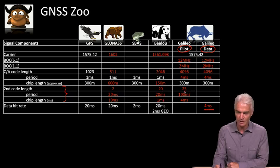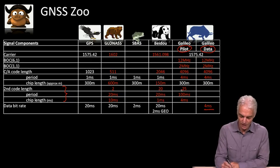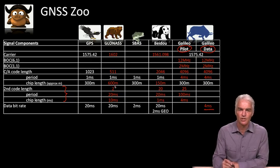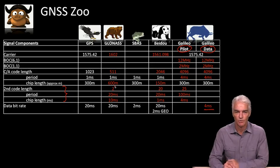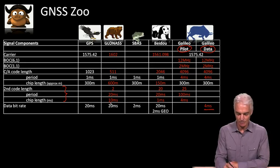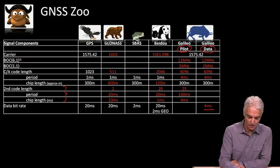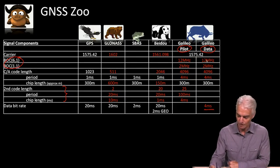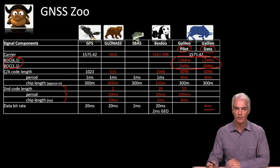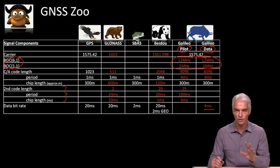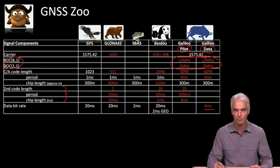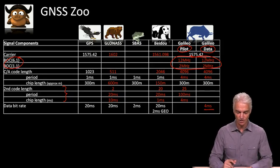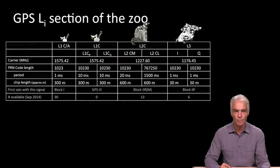There are secondary codes on some of the new systems. Beidou has a secondary code, Galileo has a secondary code, and GLONASS has something called Manchester encoding which behaves like a secondary code. We've also talked about BOC signals, which you'll see show up for Galileo. What we're showing here are the existing signals — we're not looking at GPS 3 and into the future. GPS 3 will itself have BOC encoding, but these are just the existing signals.